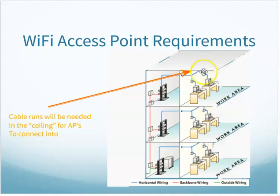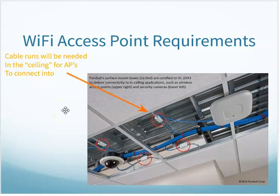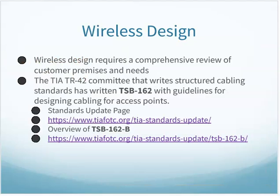The access point is typically installed on the ceiling of hallways or in a work area. It looks like a flat device with a connection on the back for copper — newer ones have fiber connections as well. In my structured cabling plan, where I need access points I'll need to put an outlet box above the ceiling to plug the access point into, whether down a hallway or across a convention floor.